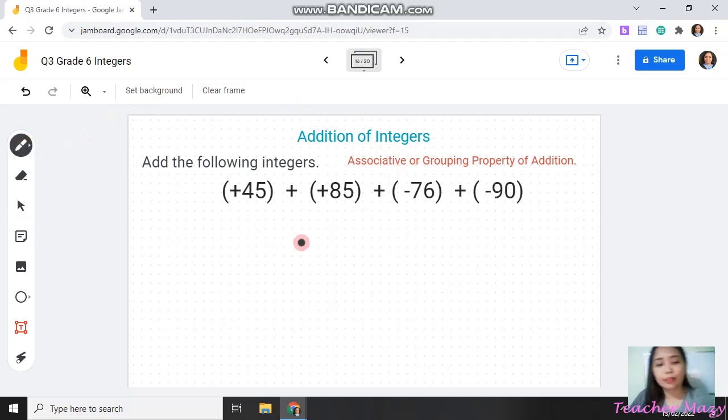To make it easier, for example, let's add 45 and 85 since both of them are positive. So, that is 45 plus 85 is equal to 130 and that is positive since both of them are positive.